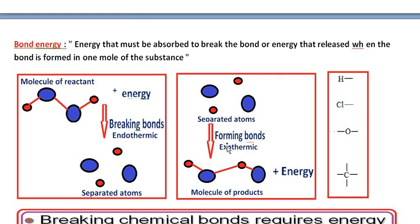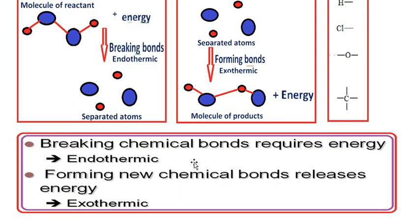In the products, new bonds are formed. And after forming the bonds, energy is given out of this bond formation process. This is the exothermic part. So the total reaction contains two parts: first, breaking of bonds which requires energy; and second, formation of bonds which is an exothermic part. Forming of new bonds in the products releases energy.